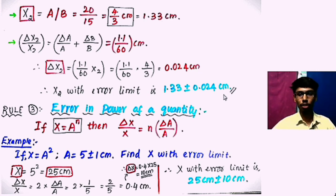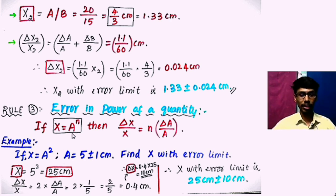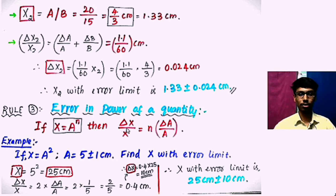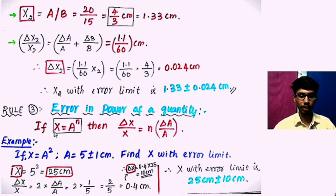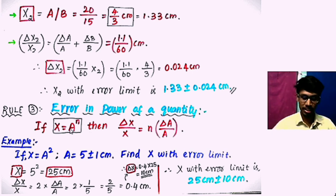This is the second rule. Now we are going to see Rule 3 — the final rule: error in the power of a quantity. If x equals a to the power n, then the relative error in x is del x divided by x equals n times del a divided by a. So we multiply the power n in front of the relative error of a.